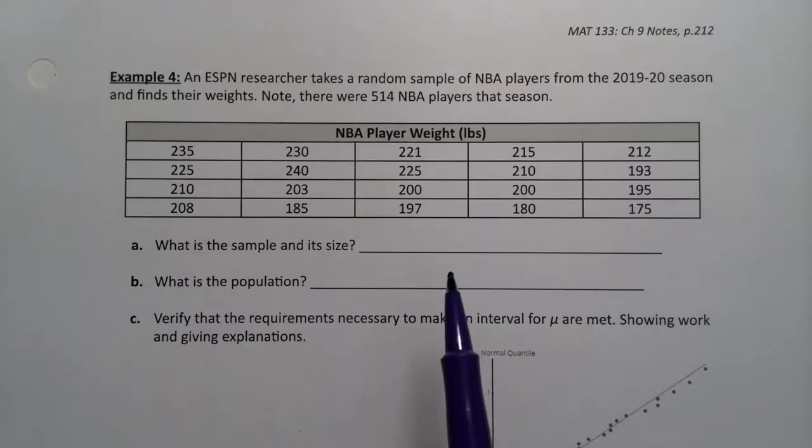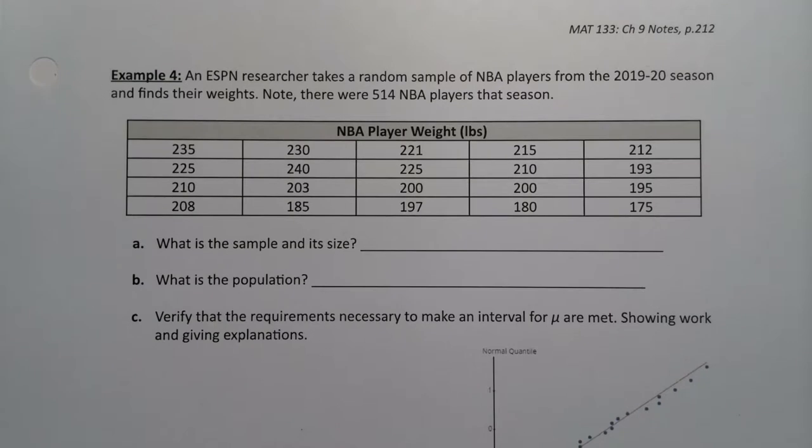In the last problem we kept saying with summary for both StatCrunch and with the calculator for how we wanted to do that confidence interval. So I thought it would be helpful to see an example that doesn't go with a summary but uses data instead.